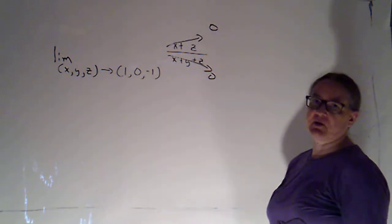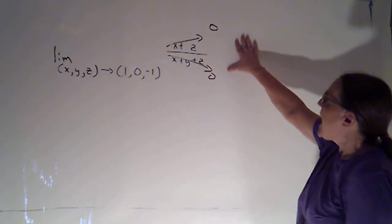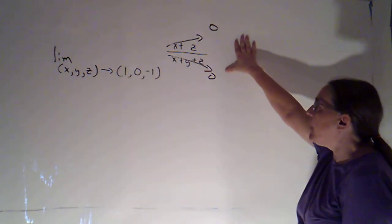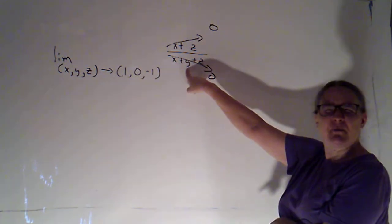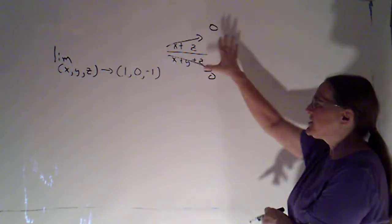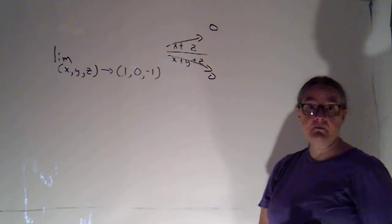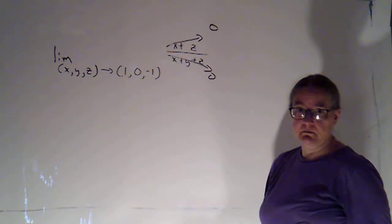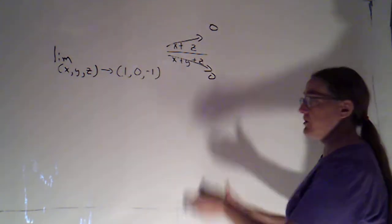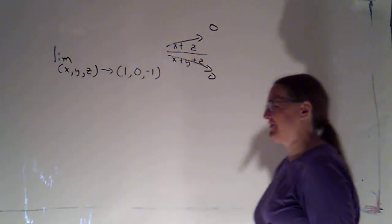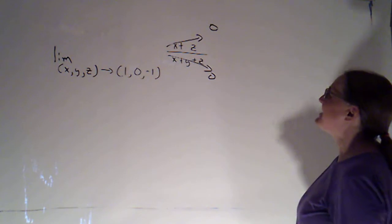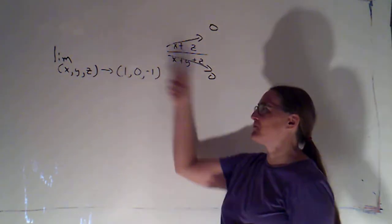I don't have the same expression on top and on bottom. I see an x plus z on top and on bottom, but I also see a y on bottom that's not on the top. So I don't see a useful substitution, and we're not in 2-space, so I don't even care that we're not approaching the origin. Polar coordinates only works in 2-space, and only if we're approaching the origin.